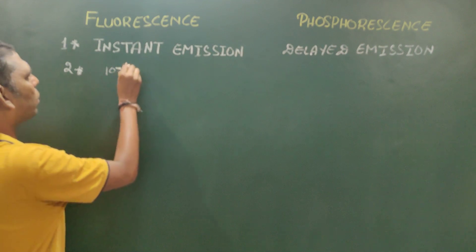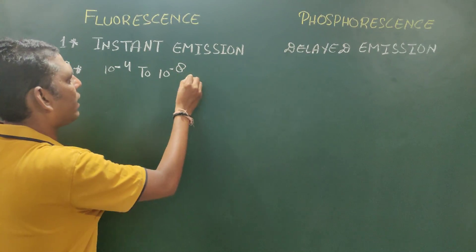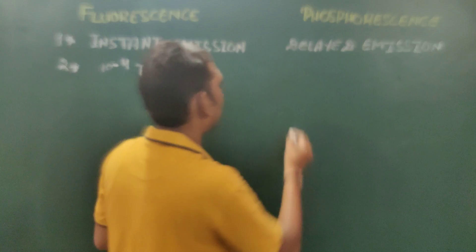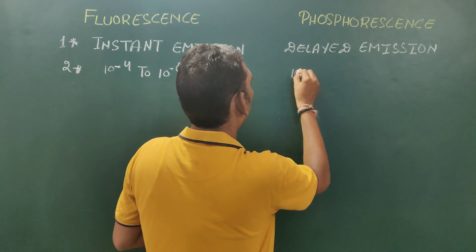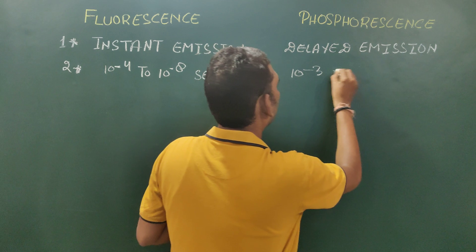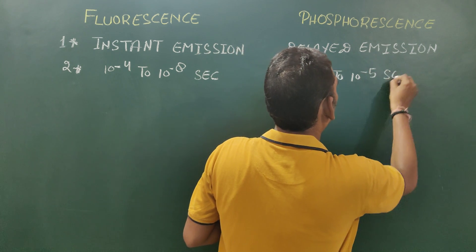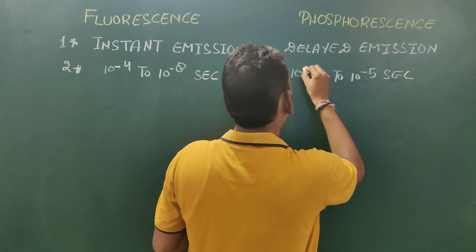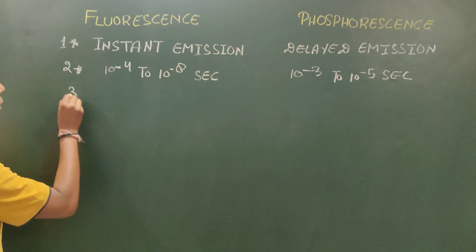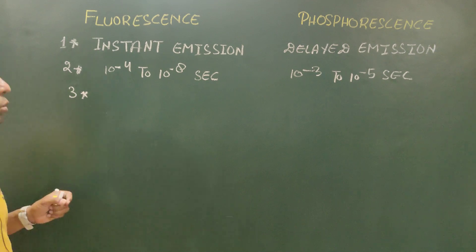The second difference is timing. The time of fluorescence is about 10 to the power minus 4 to 10 to the power minus 8 seconds, whereas the time of phosphorescence is about 10 to the power minus 3 to 10 to the power minus 5 seconds.